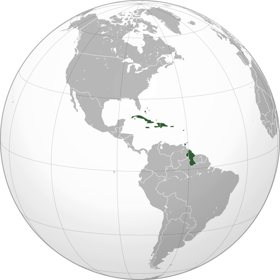The Caribbean, locally, is a region of North America that consists of the Caribbean Sea, its islands — some surrounded by the Caribbean Sea and some bordering both the Caribbean Sea and the North Atlantic Ocean — and the surrounding coasts. The region is southeast of the Gulf of Mexico and the North American mainland, east of Central America, and north of South America.